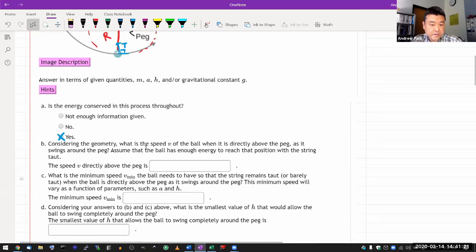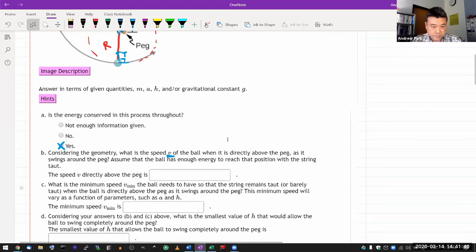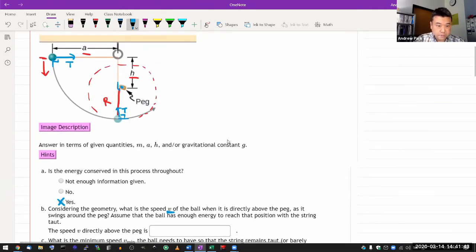Considering the geometry, what is the speed V of the ball when it is directly above the peg as it swings around the peg? Assume that the ball has enough energy to reach that position. The question is kind of walking you through the steps. So considering the geometry, I guess this is what I'm supposed to consider when this ball swings and reaches here. This is the geometry that I'm acknowledging, that the distance from here all the way down here should be A.